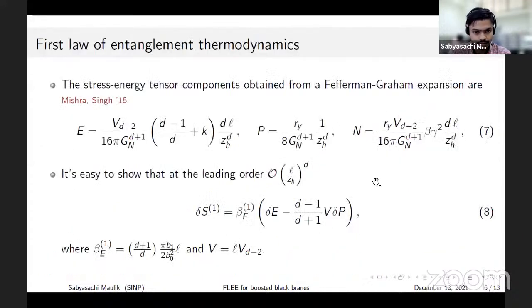Once we find out the area we can calculate the entanglement entropy. To write out the first law we need another ingredient which is the stress energy tensor, and this is usually calculated by doing a Fefferman-Graham expansion of the asymptotically AdS geometry.